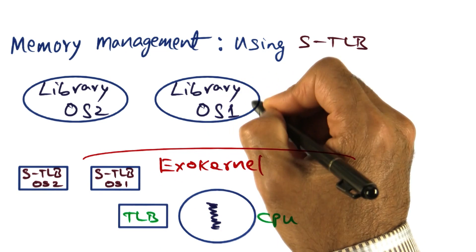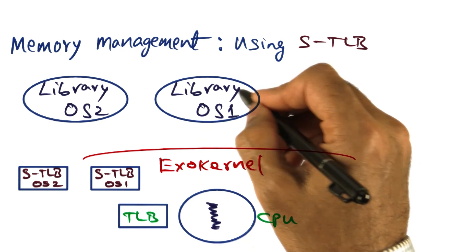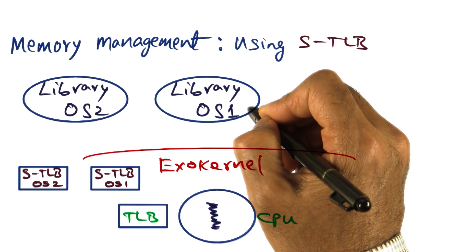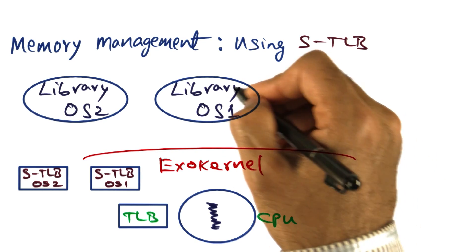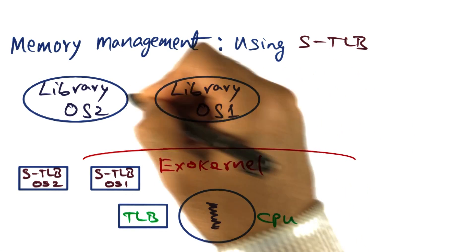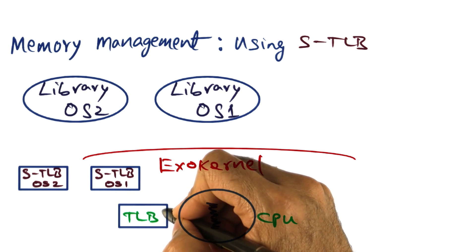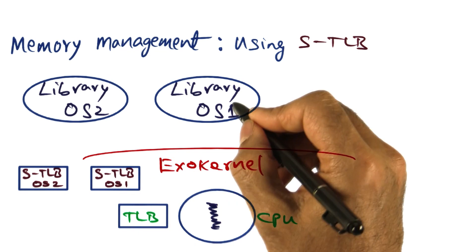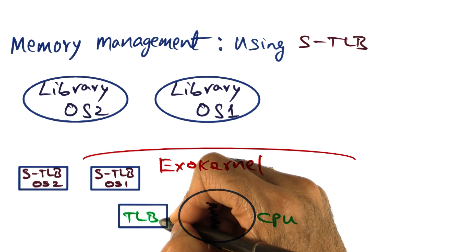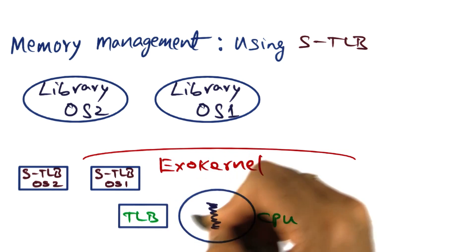So let's say currently we're running library operating system one. The TLB entries correspond to valid mappings for library operating system one. And let's say that exokernel decides to switch from this library operating system to this one. At that point, what exokernel will do is dump the TLB into the software TLB data structure that it has on behalf of OS1. Actually not all of the TLB, but we'll get to that later on. Some subset of the TLB mappings will be dumped into this data structure.